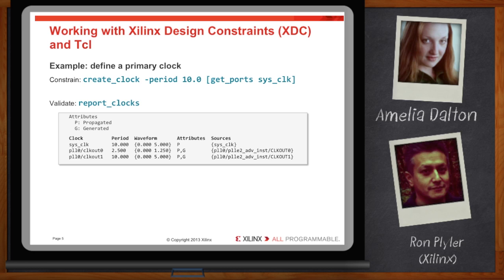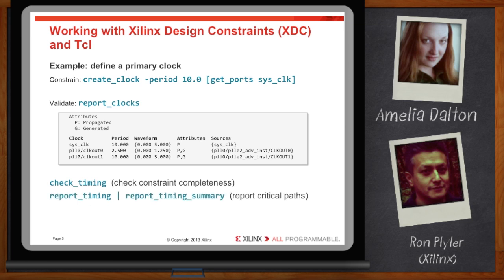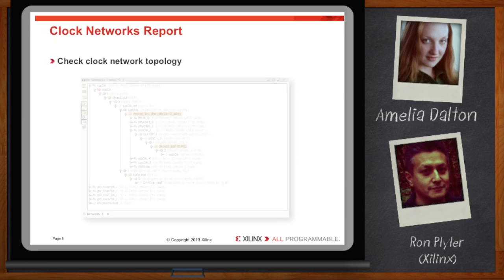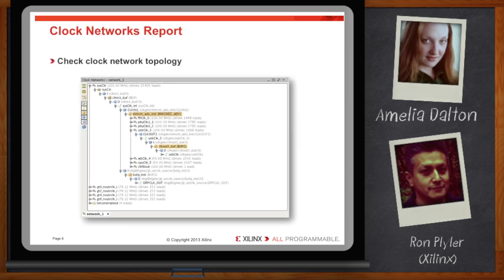Other useful commands to validate constraints throughout the flow include check timing, which can identify missing constraints; report timing and report timing summary to identify and analyze critical paths; and write XDC, which saves the current set of constraints into a file. One feature that may help us create clocks is the clock networks report. This shows us the complete topology of the design's clock network — we can see how clocks propagate through the design and it helps us understand where clocks are generated from MMCMs and PLLs.